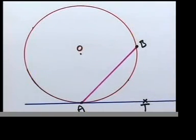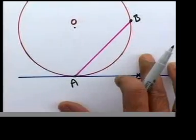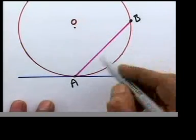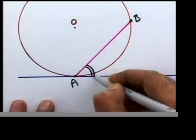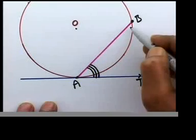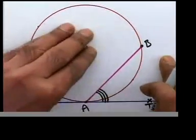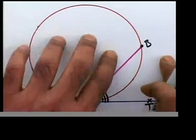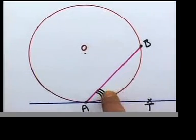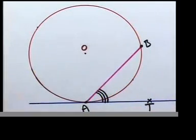Now we are going to define alternate segments. Listen very carefully. Is there any angle formed between the tangent and the chord? I can see one angle here — that's the angle between the tangent and the chord. Now, do you agree there is an empty space here? That space is called the alternate segment of this angle.